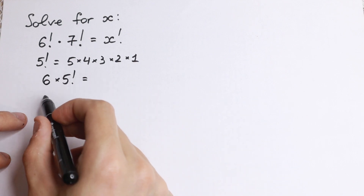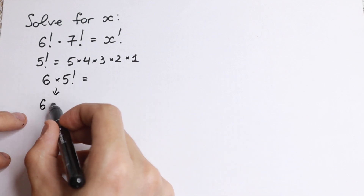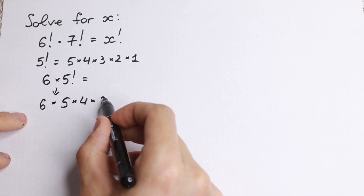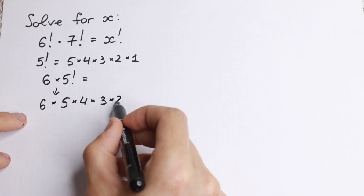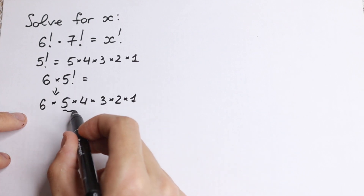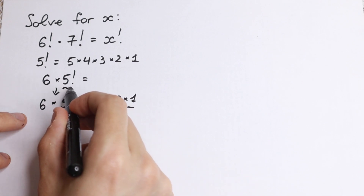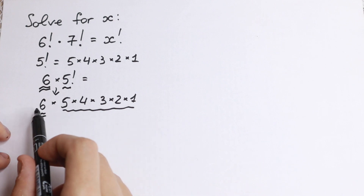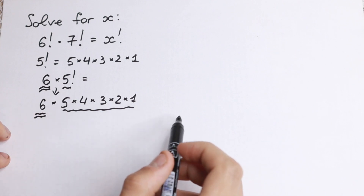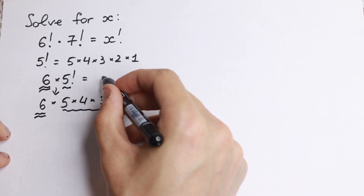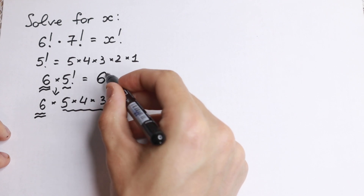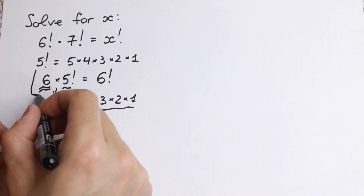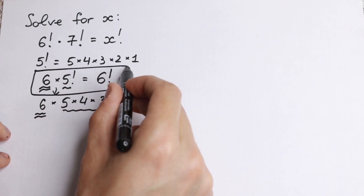Take a look. I write it on the bottom. So 6 times 5 factorial is 6 times 5 times 4 times 3 times 2 times 1. This is our 5 factorial expanded. We now have a product from 6 down to 1, so it equals 6 factorial. This is the rule I want to show you: 6 times 5 factorial equals 6 factorial.